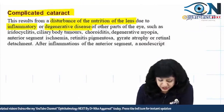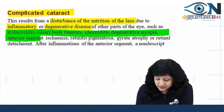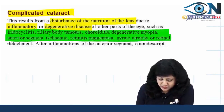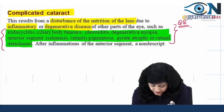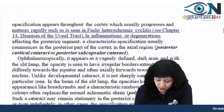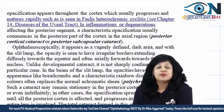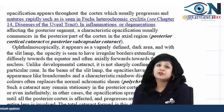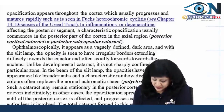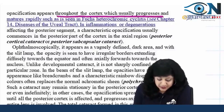Looking at the different etiologies, we can have iridocyclitis, ciliary body tumors, choroiditis, degenerative myopia, anterior segment ischemia, retinitis pigmentosa, gyrate atrophy, as well as retinal detachment. So there are many diseases where you can expect a complicated cataract. After inflammations of the anterior segment, a non-descript opacification appears. These opacities develop throughout the cortex, usually progress, and they also mature rapidly.